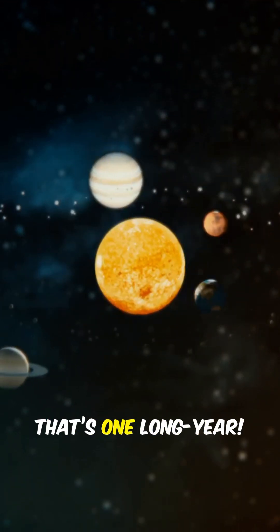It takes the sun roughly 225 million years to orbit the Milky Way once. That's one long year.